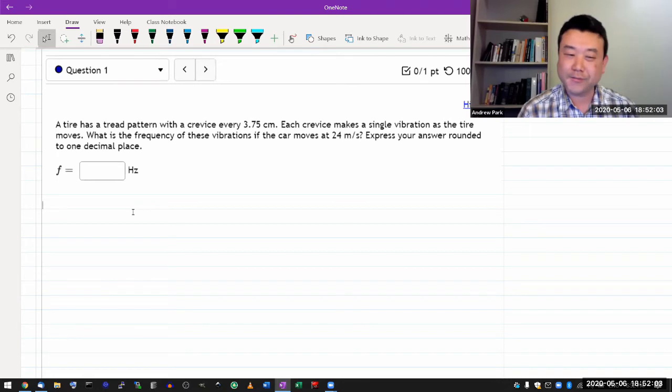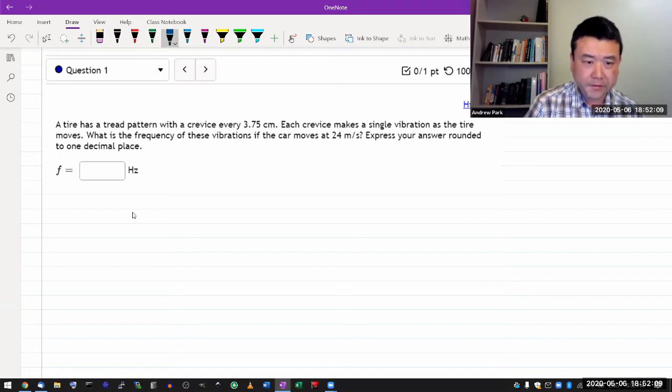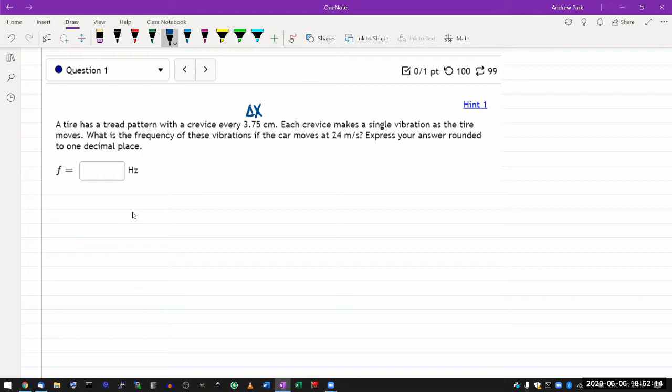So it says, a tire has a thread pattern with a crevice every some length. Let me call this delta x. Each crevice makes a single vibration. So each crevice corresponds to a single cycle as the tire moves. What is the frequency of these vibrations if the car moves at speed of 24 meters per second and some rounding thing? We are getting that fixed.